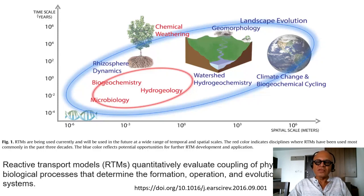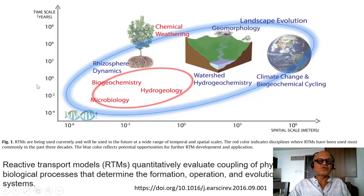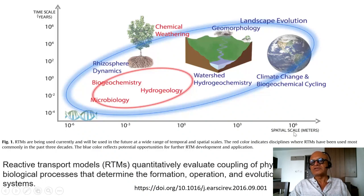But over time, all these physical, chemical and biological processes have been involved in the evolution of those surfaces, and of course they keep changing as climate changes. Here we are looking at scales going in time scale from 10 to the minus 4 to 10 to the 6 in years, and spatial scales going from 10 to the minus 6 — at the DNA/RNA scale — to 10 to the 6 at planetary scales.